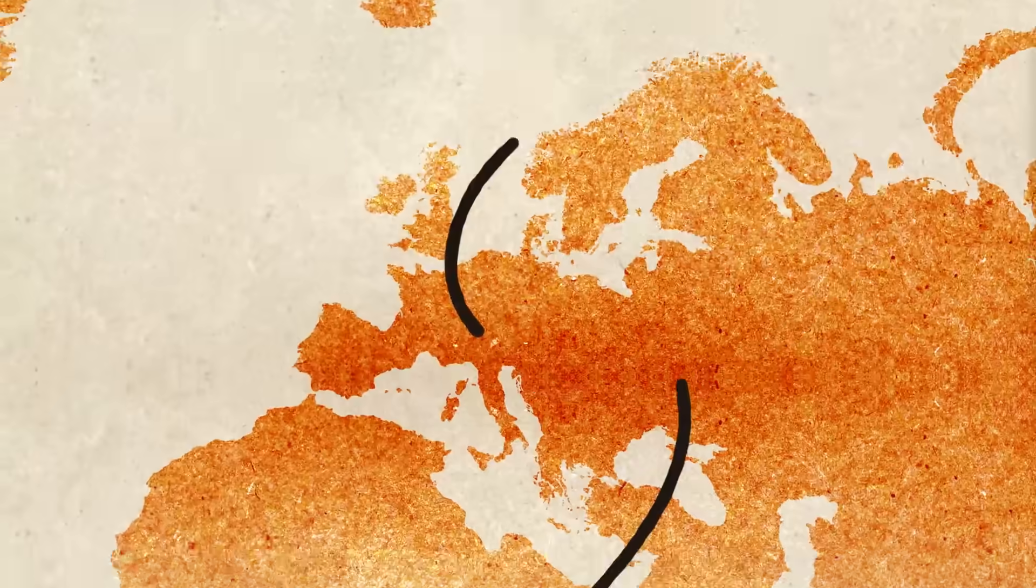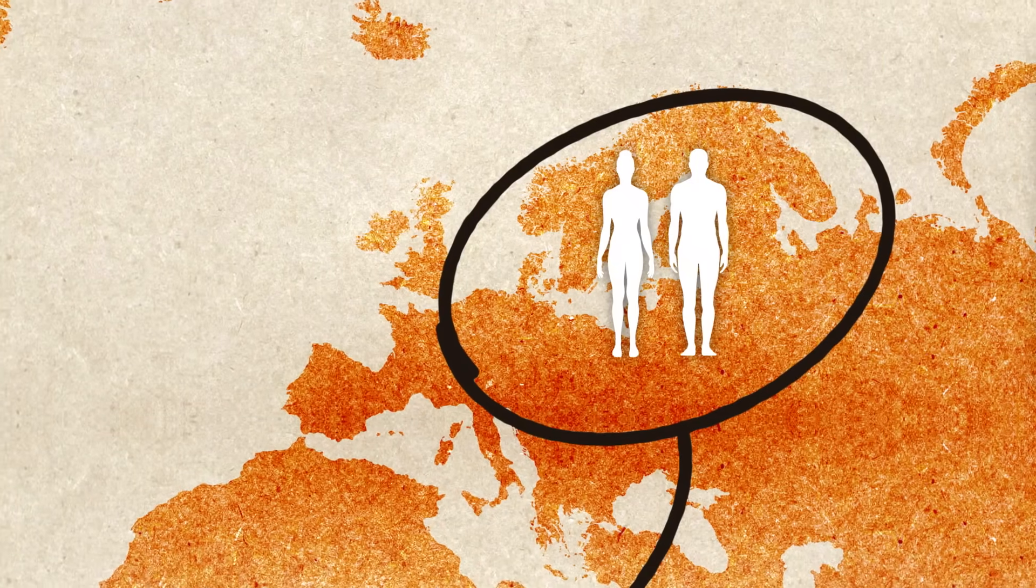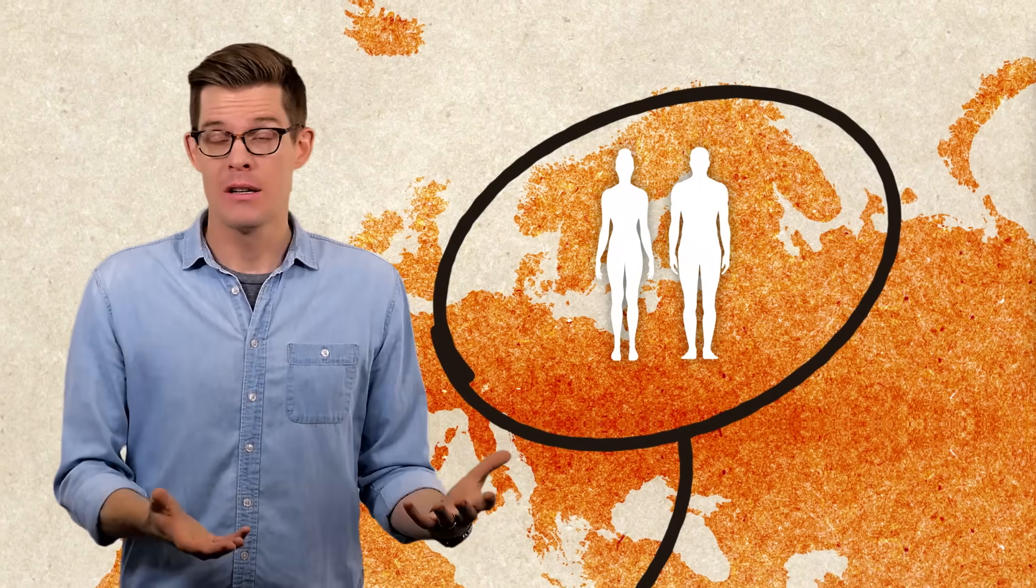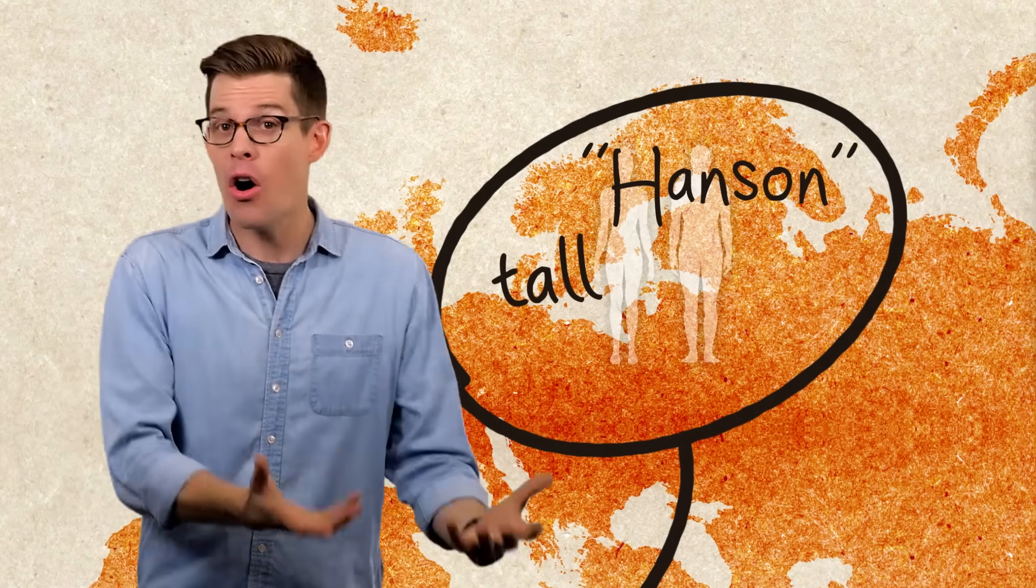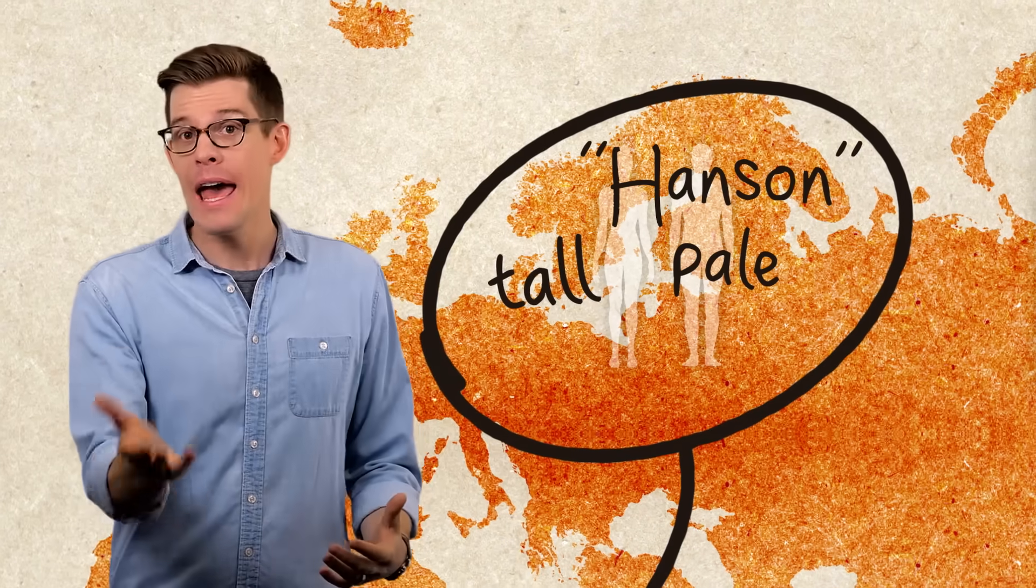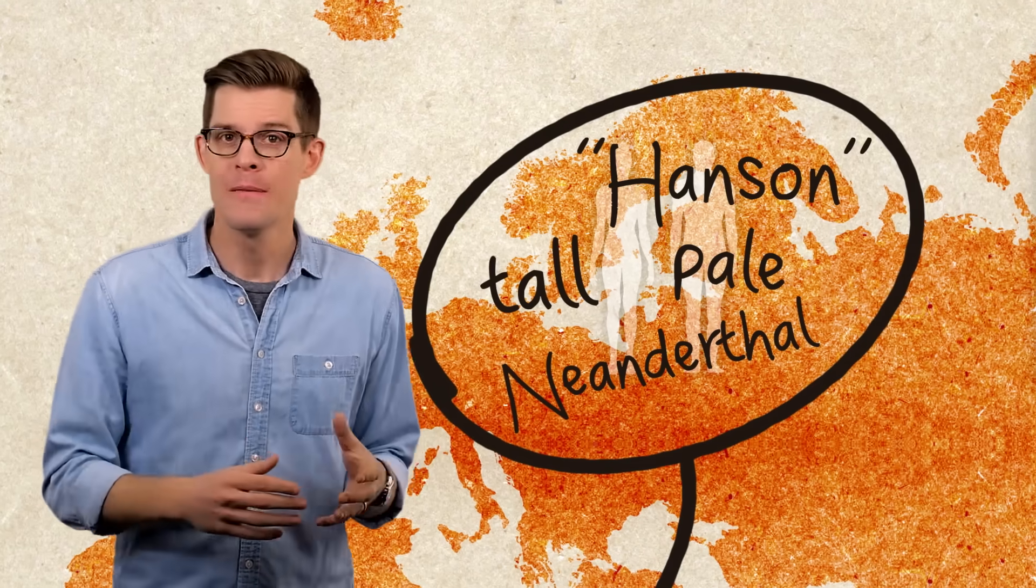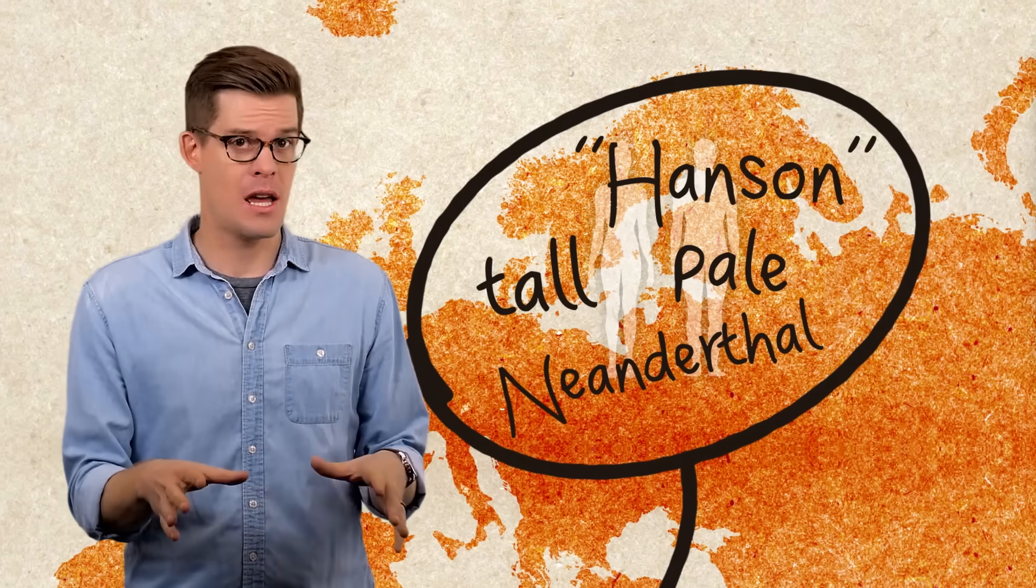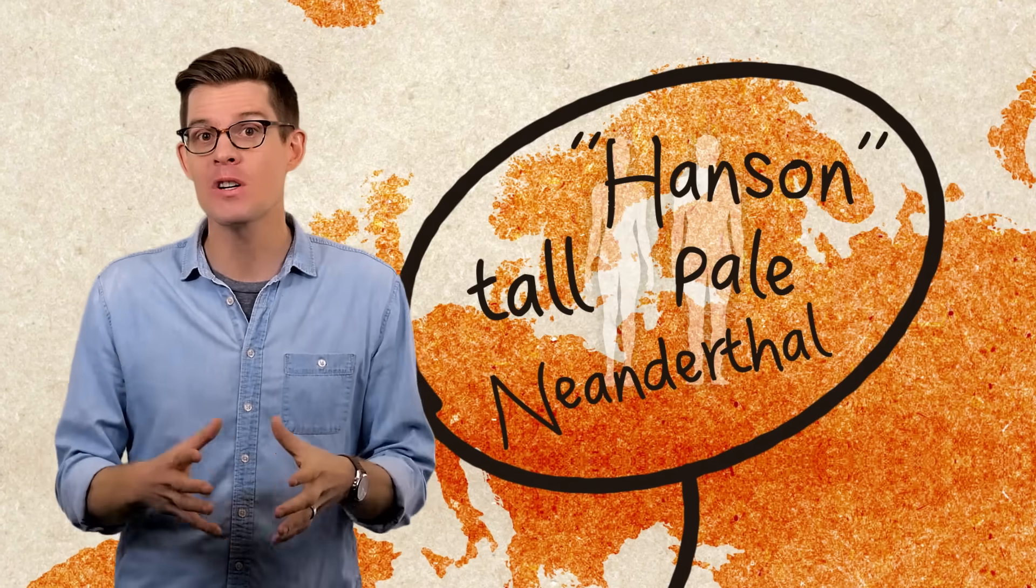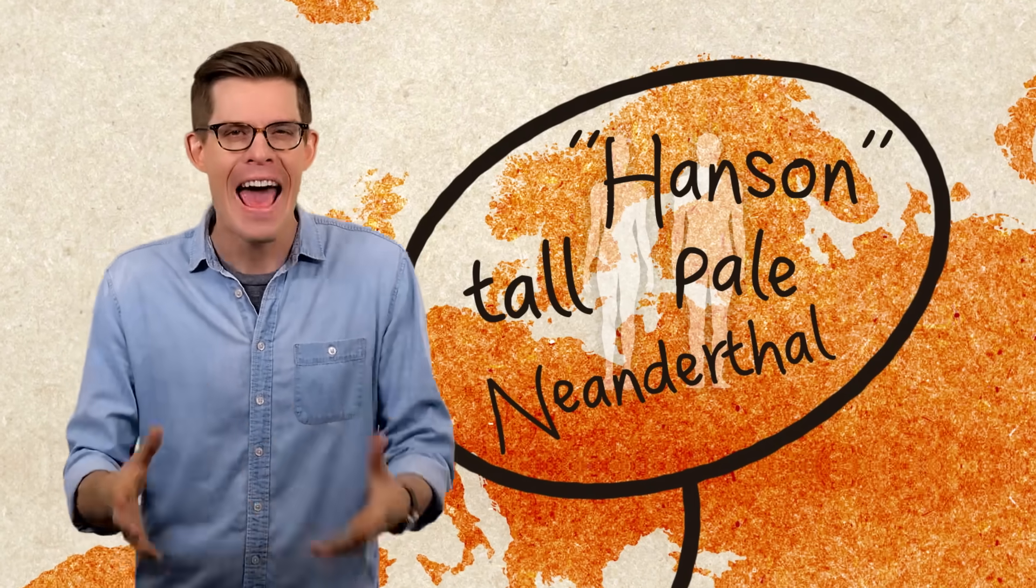My genetic results pretty much look like this. My ancestors on both sides of my family are from Northern Europe and Scandinavia, which explains my last name, why I'm tall, why I don't tan, and also why I carry more Neanderthal DNA than two-thirds of people. If you're confused why I have Neanderthal DNA, you should watch our last video. I didn't find any surprises, but many people learn about ancestry they didn't know they had.